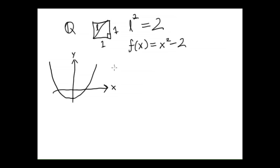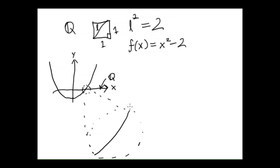Now as a thought experiment, let's pretend that we've swapped out the x-axis — which is normally thought of as a copy of the real number line — with a copy of the rational number line. Let's investigate the site of this crossing here. Let's zoom in on it and see what we think is going on. Here's the graph of f(x), and here's our mutated Q x-axis, and we ask what happens when it passes through the x-axis.